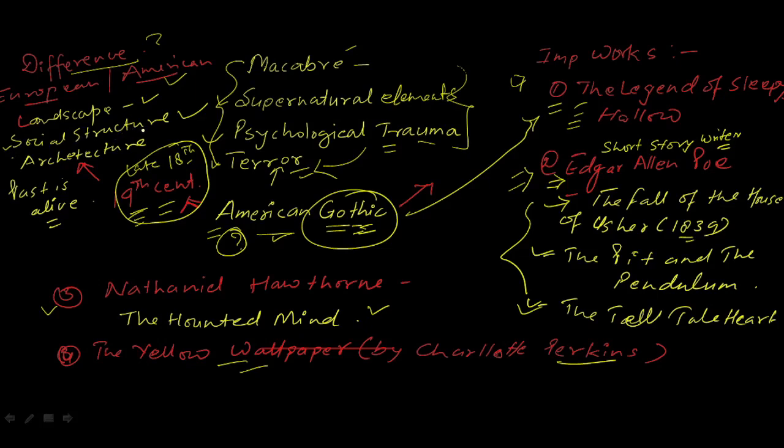This is important: past is alive. You will see past is alive in American Gothic literature. These are common themes in American Gothic literature. And you can see the blurred line between reality and fantasy in American Gothic literature. So we covered the definition of American Gothic literature and the elements of Gothic genre.